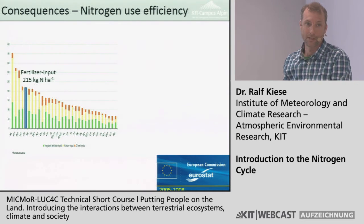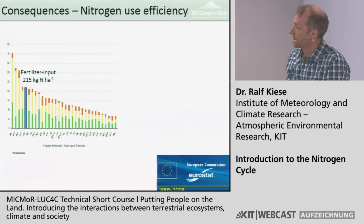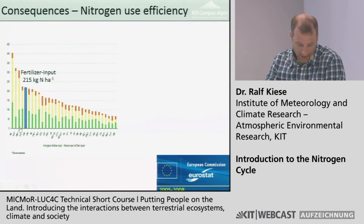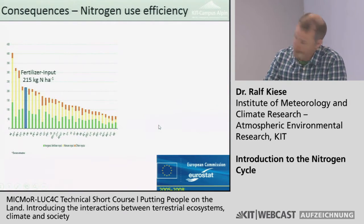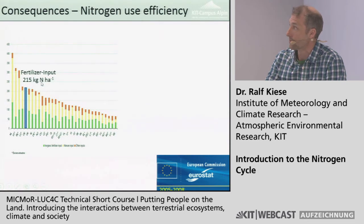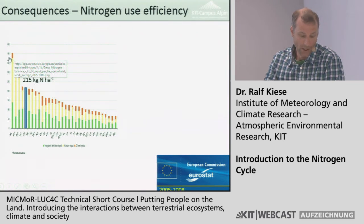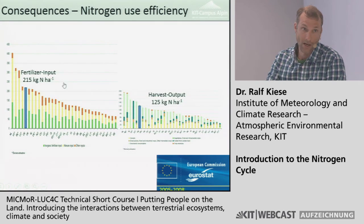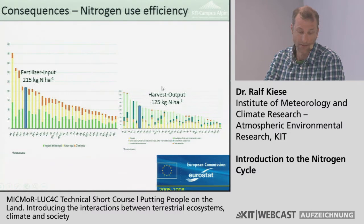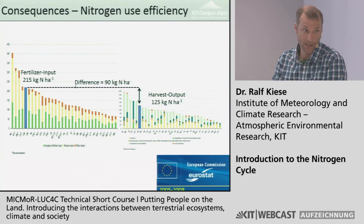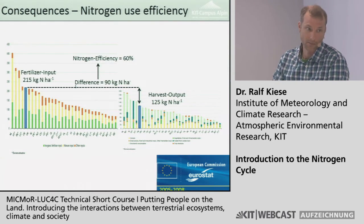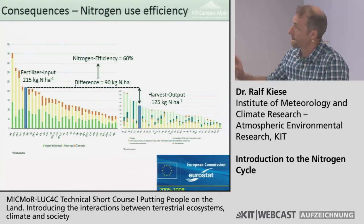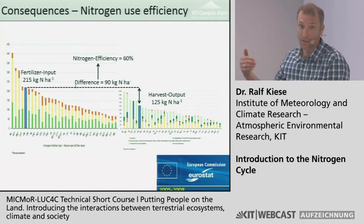Why is nitrogen not completely taken up? A balance for Europe shows different countries: Germany applies on average 215 kg of nitrogen per hectare, while the Netherlands applies a little more. But comparing input to crop harvest, only 125 kg of nitrogen is taken up by plants. The difference is 90 kg staying in the environment — prone to transport. We talk about an efficiency of only 60%, which is very low for a production process, suggesting we could do something to increase this efficiency and reduce export into the environment.